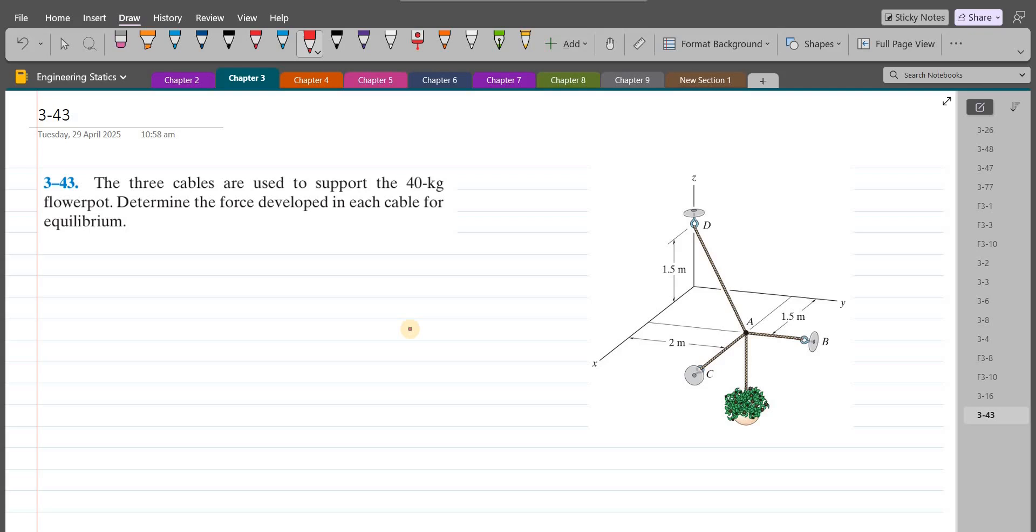Welcome back to the solutions manual. In this video, we will solve problem 3-43 from R.C. Hibbeler Engineering Statics 14th edition. According to this problem, the three cables are used to support the 40 kg flower pot. Determine the force developed in each cable for equilibrium.